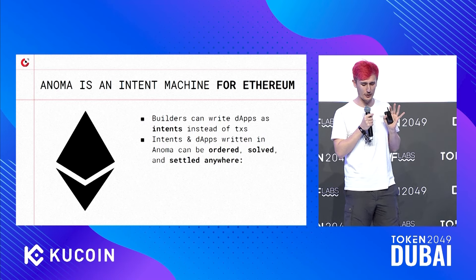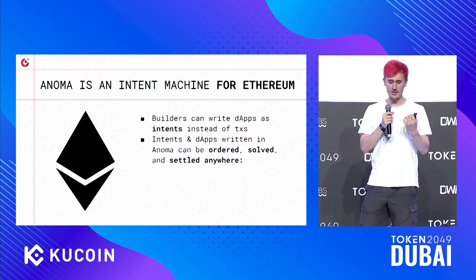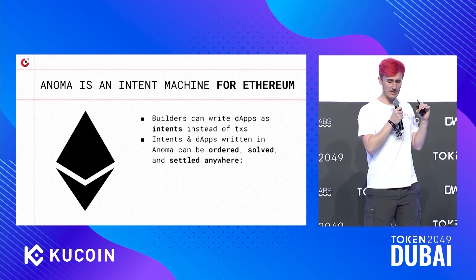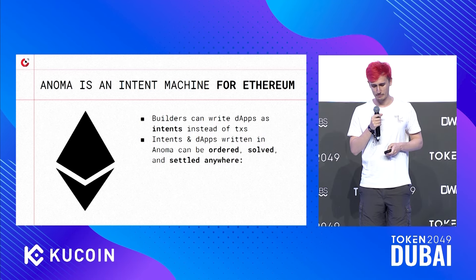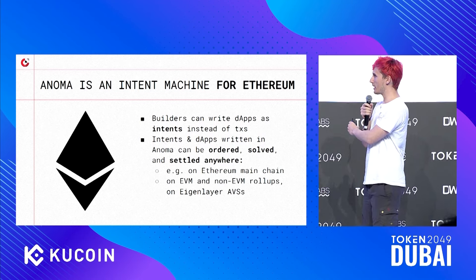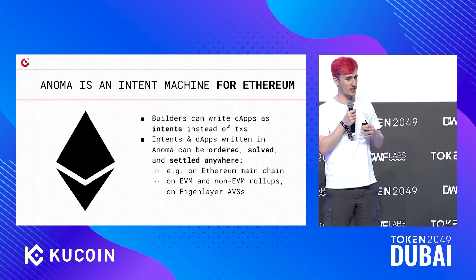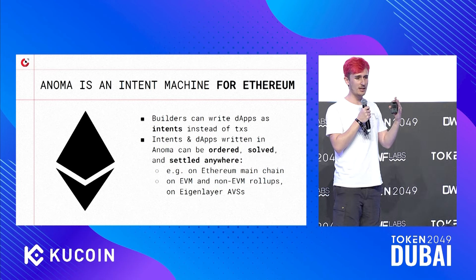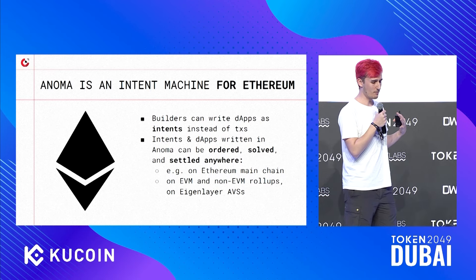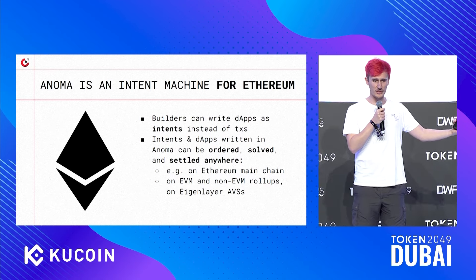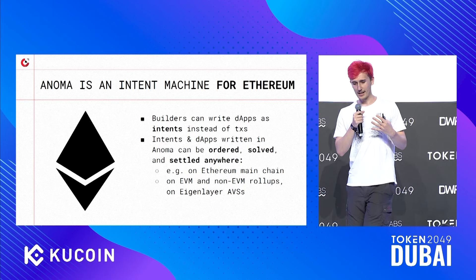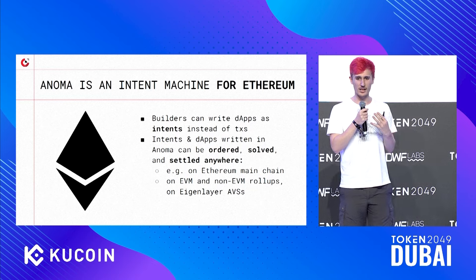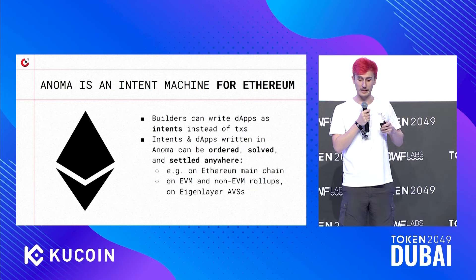Anoma is a universal intent machine for Ethereum. Builders can write dApps as intents instead of transactions. Intents and dApps written in Anoma can be ordered, solved, and settled anywhere — this may mean settled on the Ethereum main chain, on some EVM or non-EVM rollup, or even something like an EigenLayer AVS. The important thing is intents can be settable anywhere the user actually wants to settle them. The security model is defined by the user — they can pick in their intents what security model that intent should get executed in.